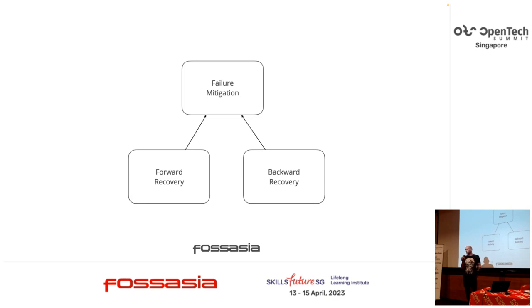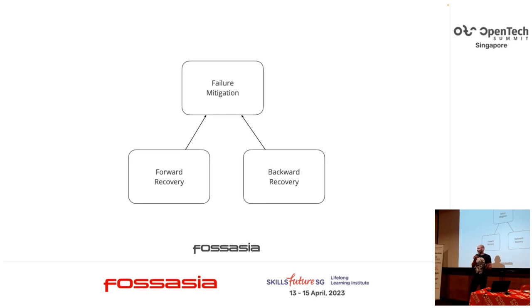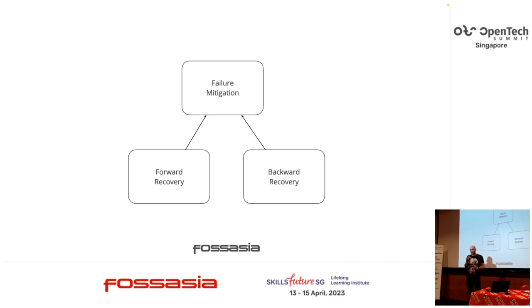The second component of failure handling is failure mitigation — it refers to the mechanism that actually addresses or resolves the suspected failure. Broadly speaking, there are two failure management techniques: forward recovery and backward recovery. The process is a sequence of steps and any partial execution is undesirable.